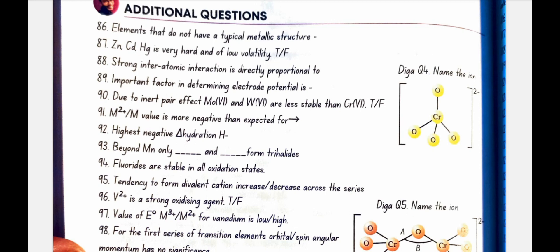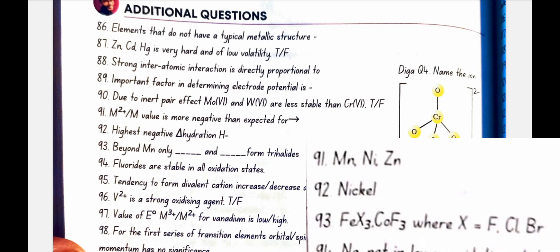M2 plus or M value is more negative than expected for Mn, Ni, and Zn. Highest negative change in hydration energy is for nickel. Beyond Mn, only Fe X3, Co F3 form trihalides where X is F Cl Br.